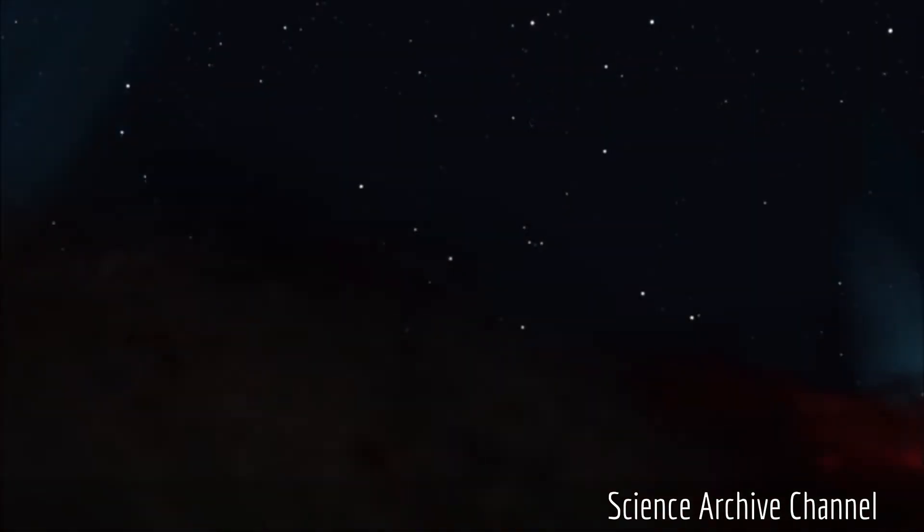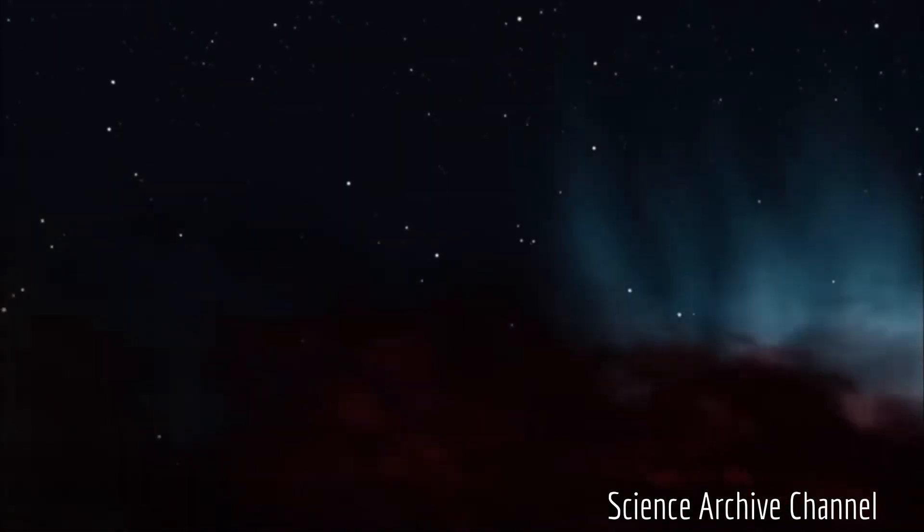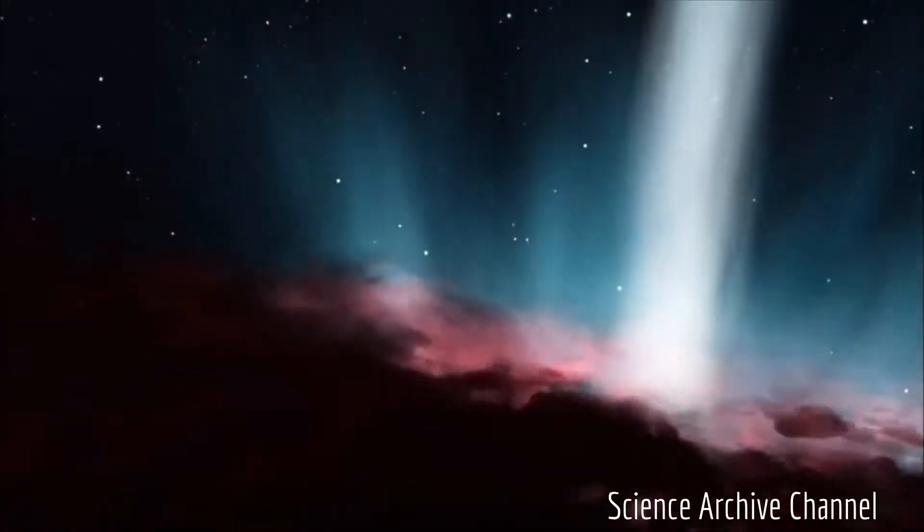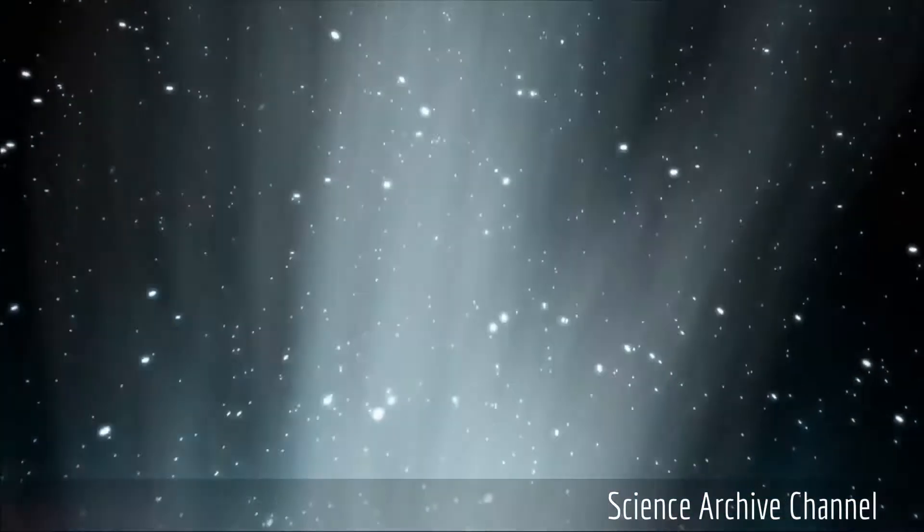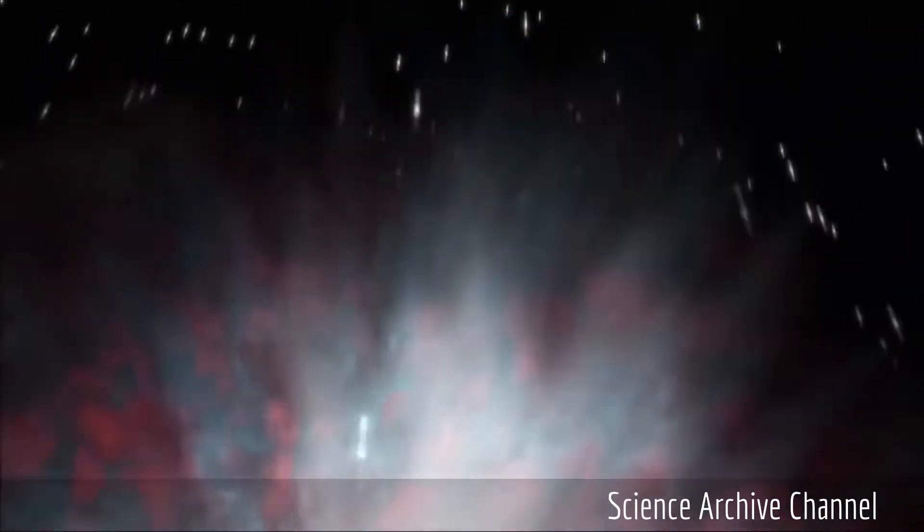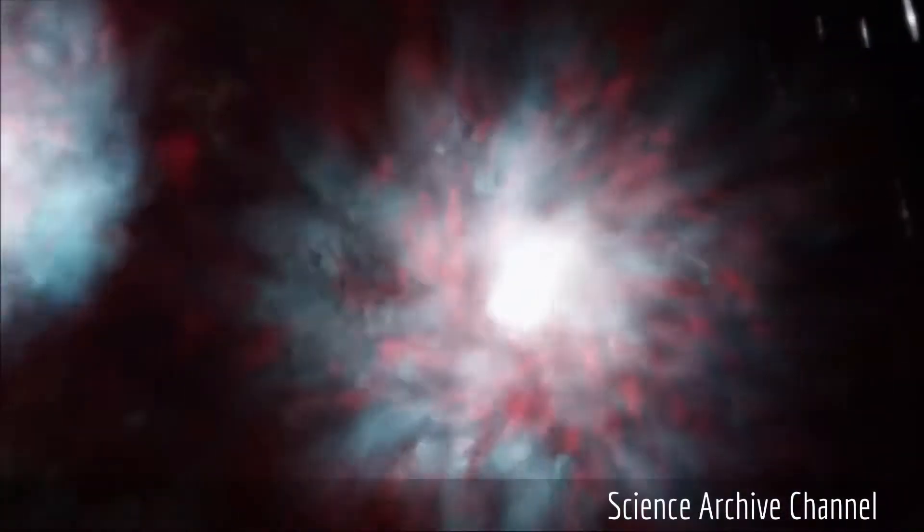During the merger, if our solar system moves through the suburbs, or the edges of Andromeda, we might not notice anything. On the other hand, countless stars and space material could be propelled towards the planets, potentially disrupting their orbits around the sun.